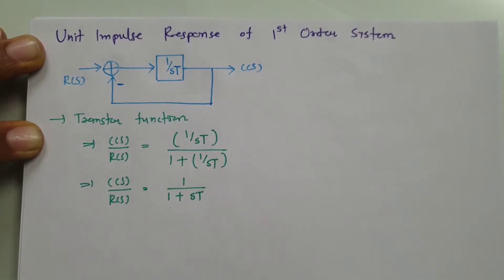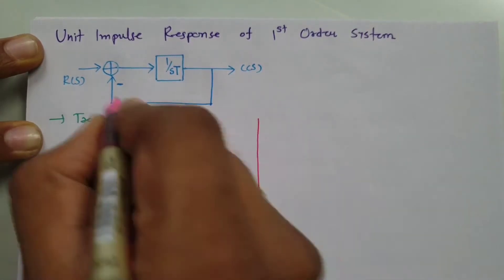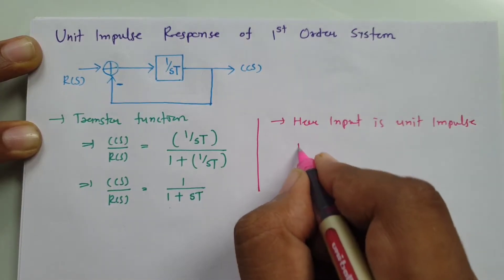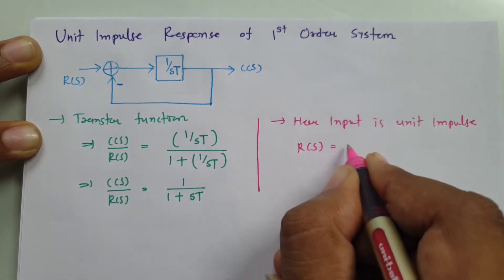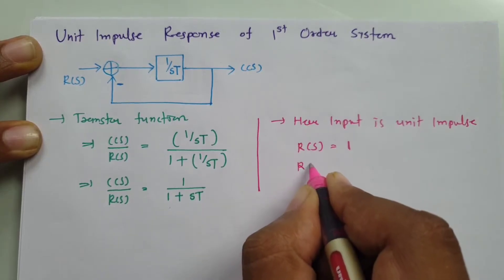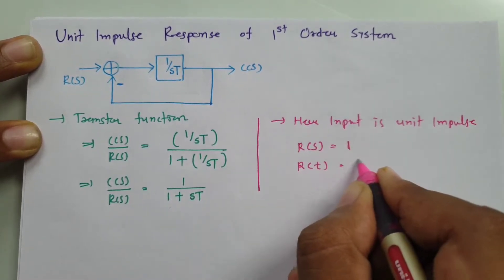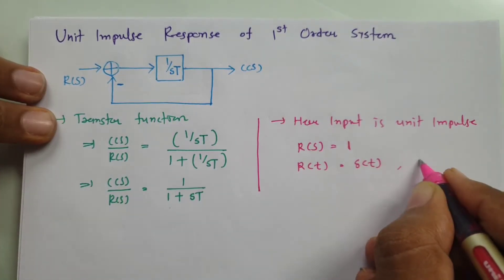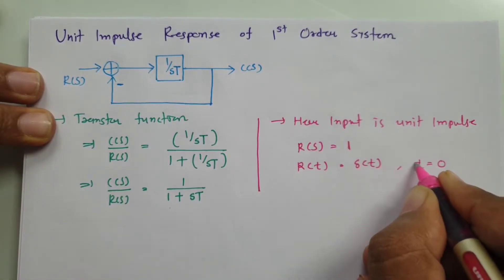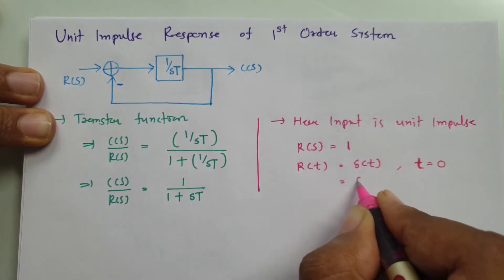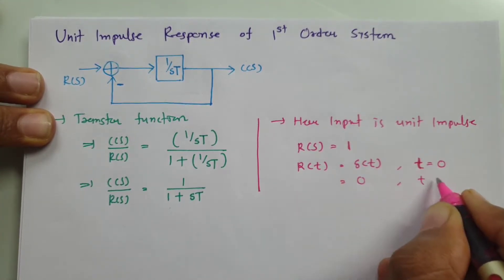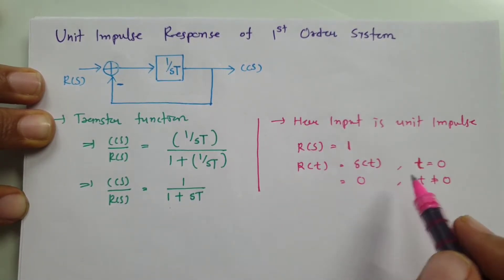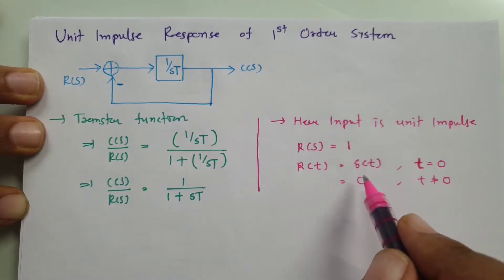Now, in this system our input is unit impulse. For unit impulse input, R(s) equals 1, and in the time domain R(t) equals δ(t). The impulse is present at time t equals 0; otherwise its value is 0 for t not equal to 0. That is how the impulse signal is defined, and I will show you this graphically as well.